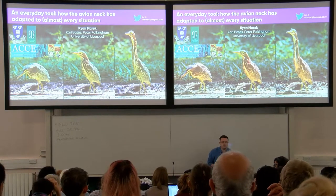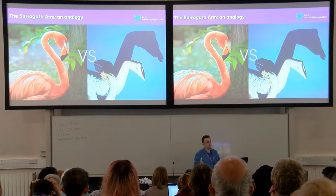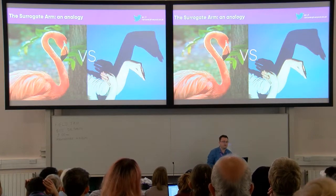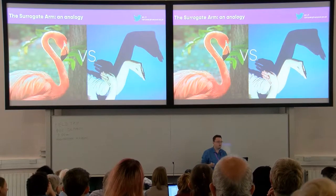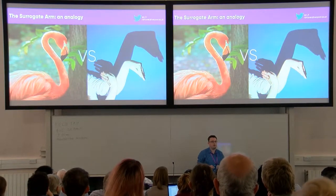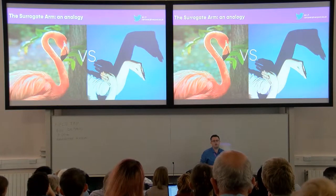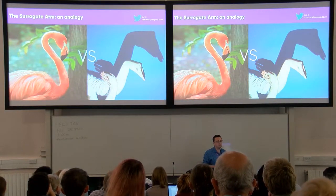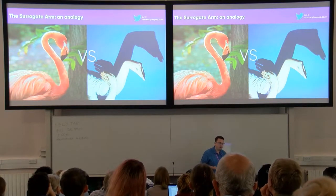Good afternoon everybody. I'm going to get straight into it. What may first seem like a really strange analogy - bear with me - I'm going to equate the avian neck to the human arm. A lot of people have called the beak and head of birds a surrogate hand. I think it's appropriate to extend this analogy, because the neck positions the surrogate hand to maximise the efficiency of manipulating its environment and catching prey items.